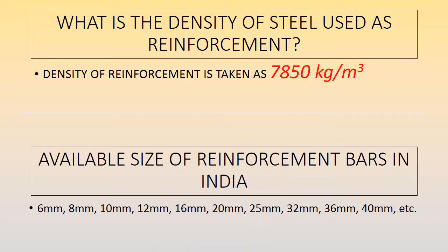Before discussing that, let's first discuss the density of reinforcement steel. The question is: what is the density of steel used as reinforcement? The density of a reinforcement bar is taken as 7850 kg per meter cube. Now we will see the sizes available for reinforcement bars in India.